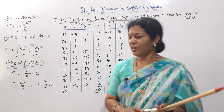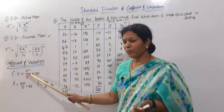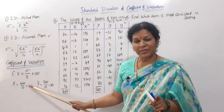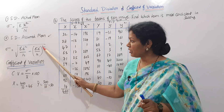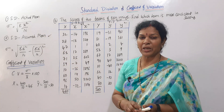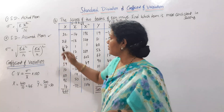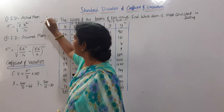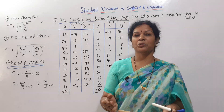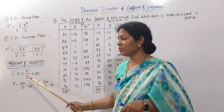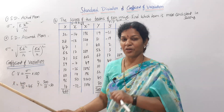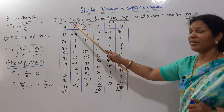As per the formula, rho by x̄ into 100, x̄ is the arithmetic mean which is compulsory to calculate. So we'll use this formula to get arithmetic mean and standard deviation together. That arithmetic mean we are going to use in the CV formula.